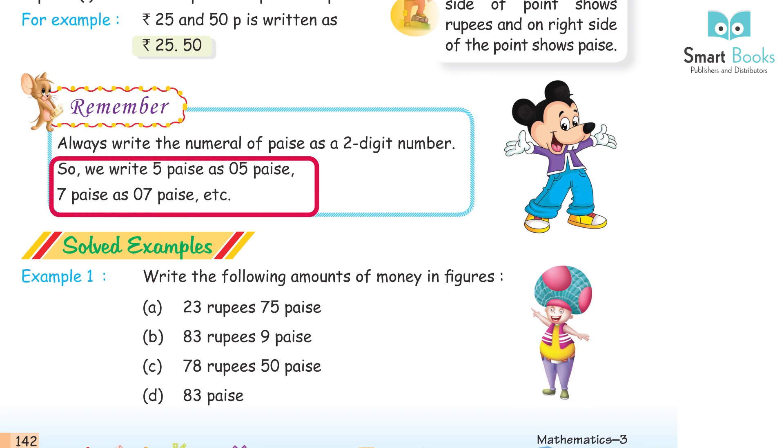Remember: always write the numeral of paise as a two-digit number. So we write 5 paise as 05 paise, 7 paise as 07 paise, and so on.